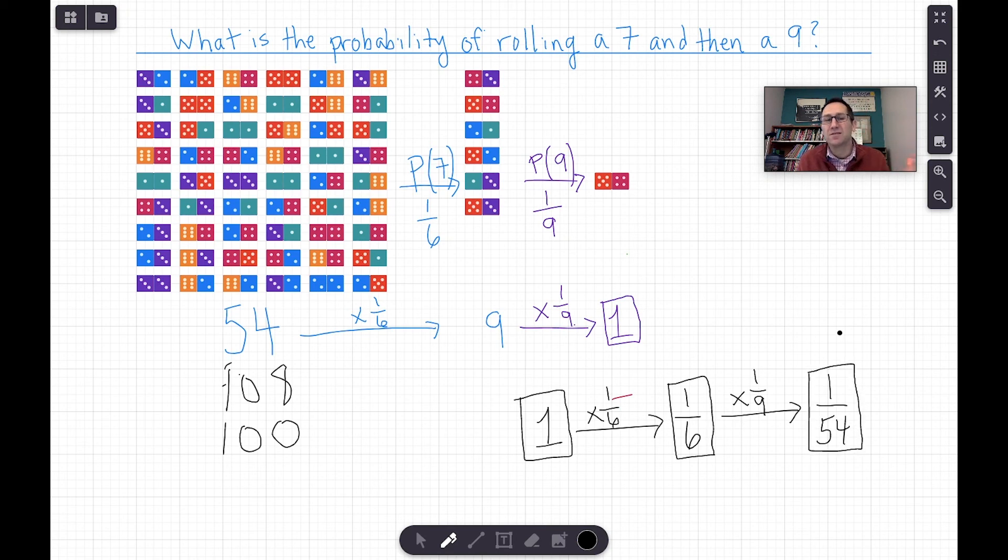And certainly you'd practice a lot of these, but I think the visual of starting with 54 dice and then getting it smaller and smaller as you go through the event helps build that understanding of when to multiply probabilities.